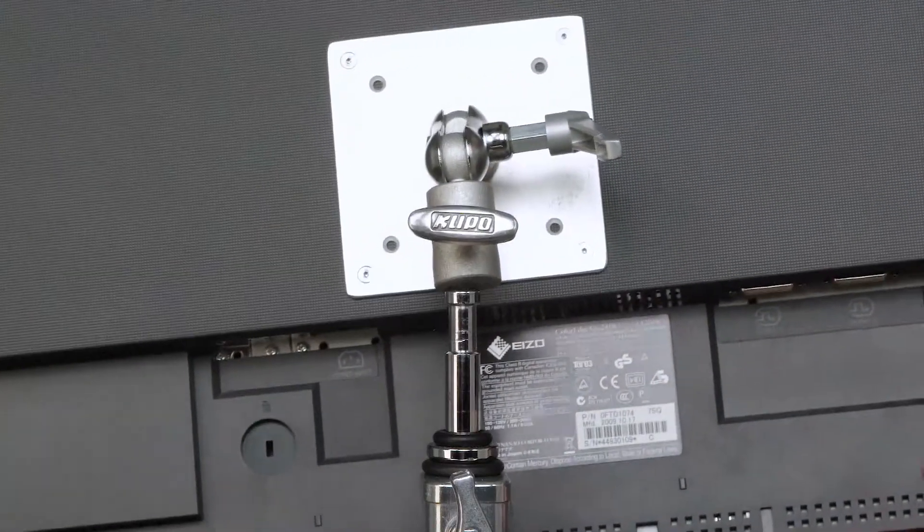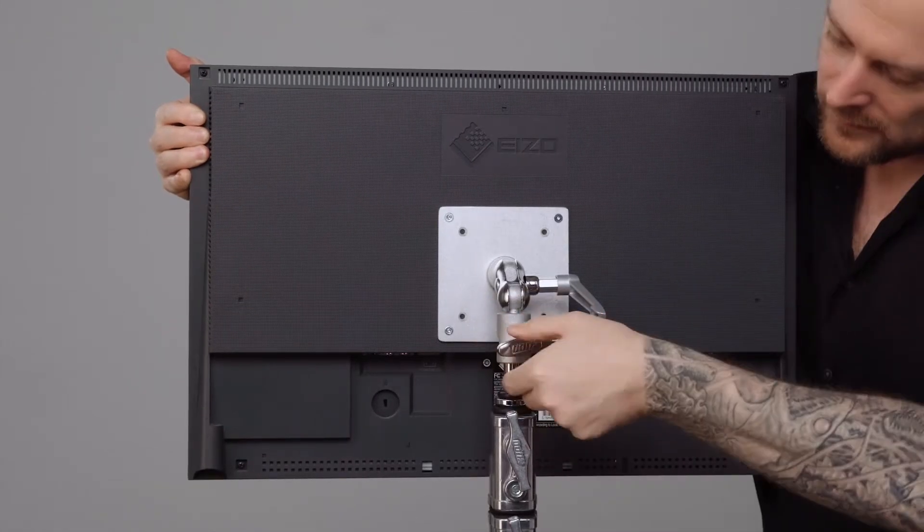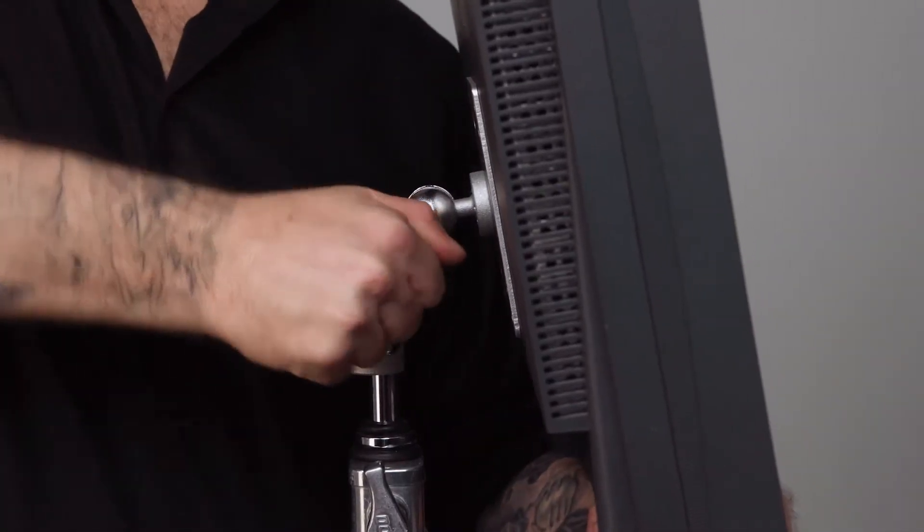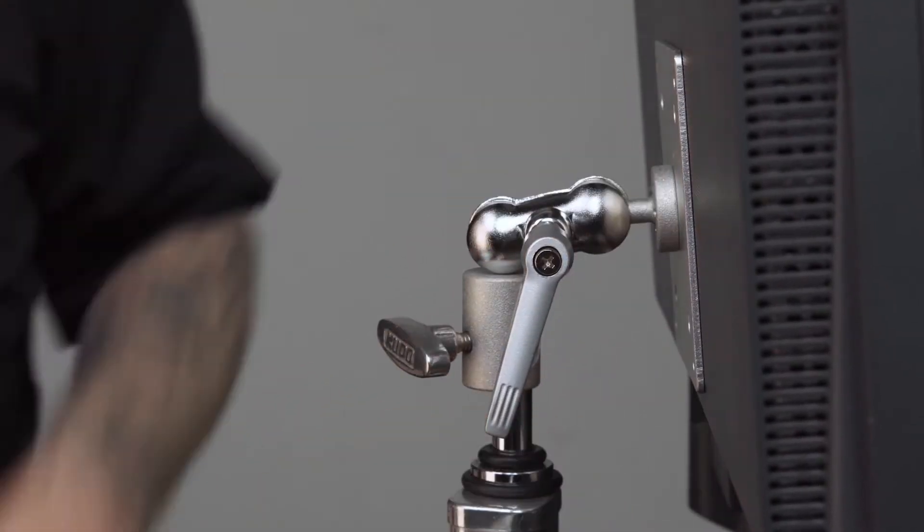The Kupo Monitor Adapter features a baby 5-8 inch receiver to mount on any baby pin such as this light stand, as well as a double ball joint to easily position a monitor, and a ratcheting handle for when you are in close quarters.